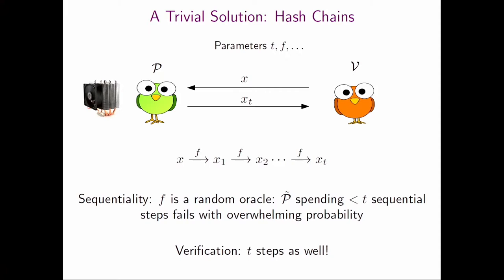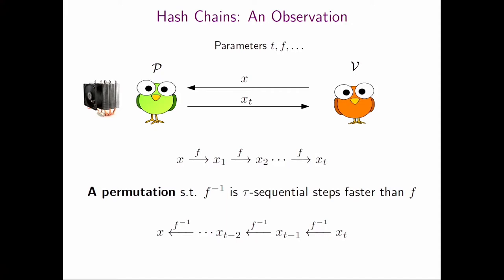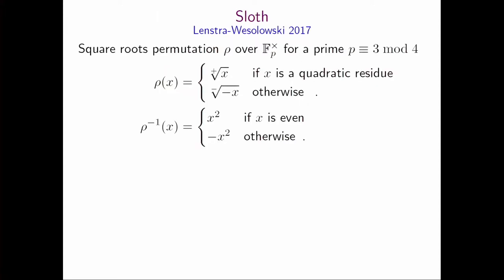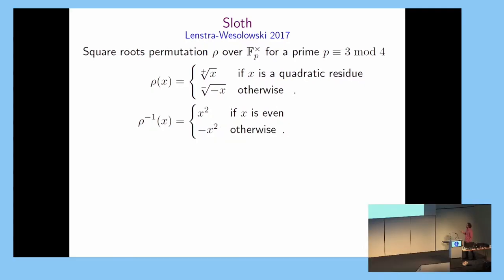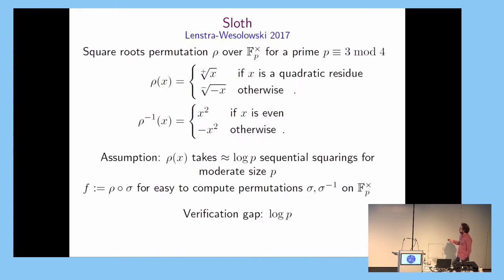If we have a random permutation f such that applying it in the backward direction is much faster, then the verifier could do verification in the backward direction. The prover proves in the forward direction, the verifier in the backward direction. Depending on the gap between forward and backward evaluation of f, we could have something practically relevant. An instantiation of this idea is the sloth function — a carefully defined square root permutation over the multiplicative group of a finite field of size b. In the forward direction it computes square roots; in the backward direction it's one squaring.